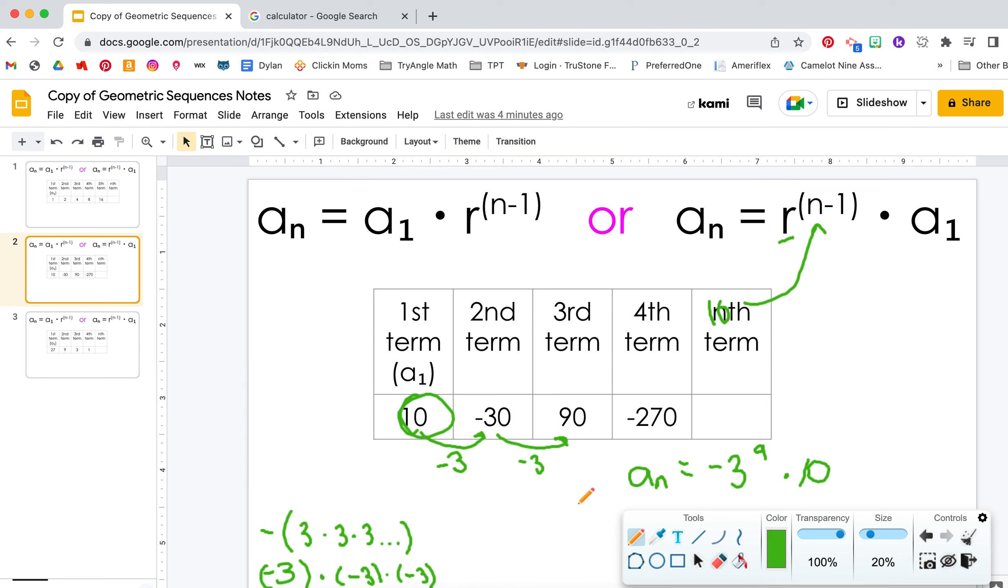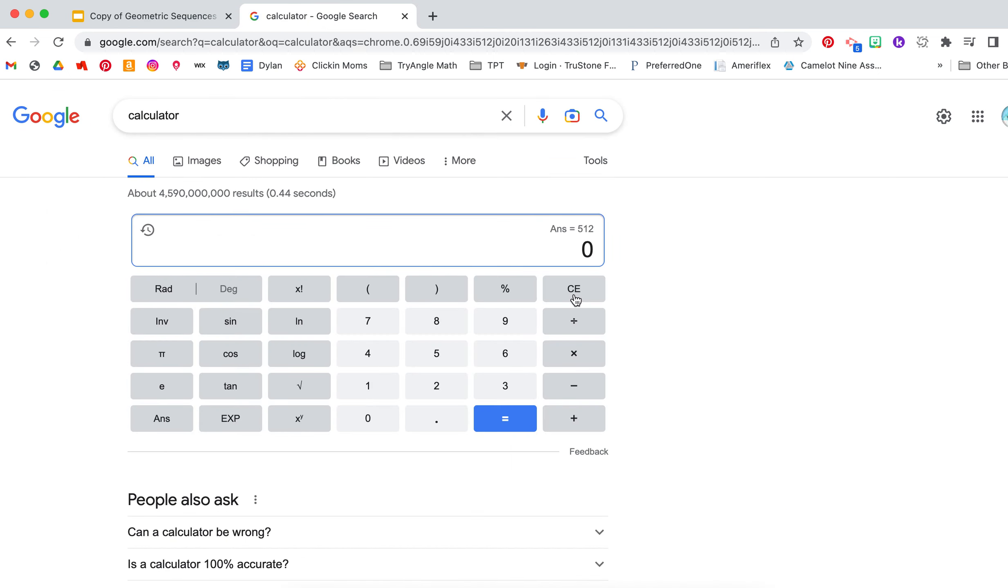Tyler, give me two minutes. So negative 3 to the power of 9 times 10. Clear that out. Negative 3 to the power of 9, and then times that by 10. So this would be your answer, and you're going to get a lot of silly answers today. When you put that into your assignment, you do not need any commas.